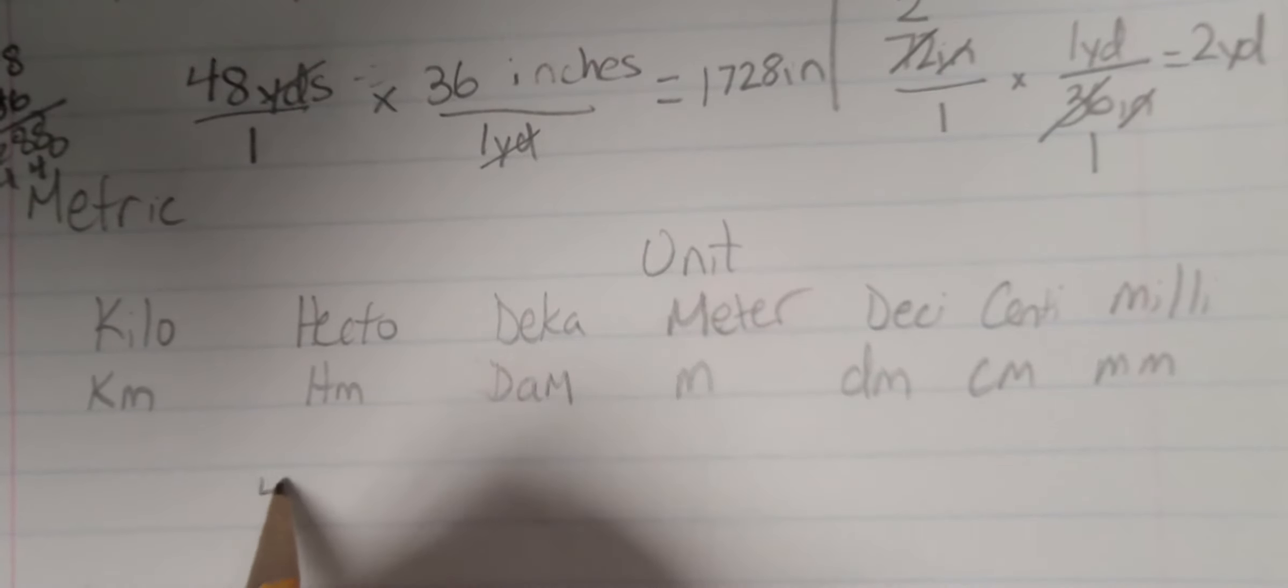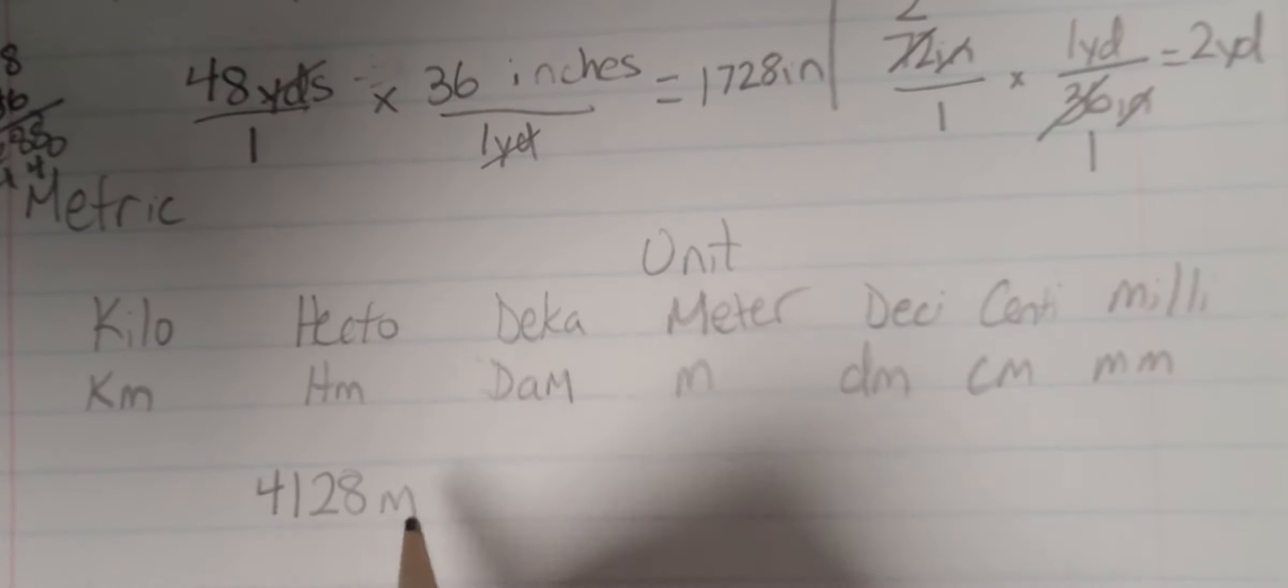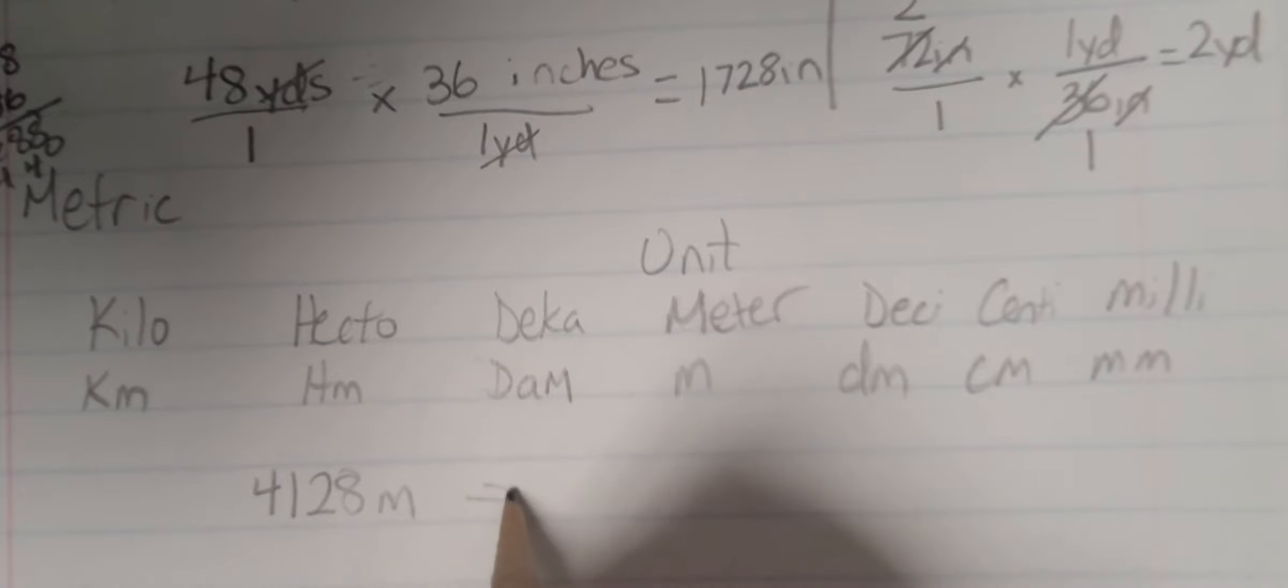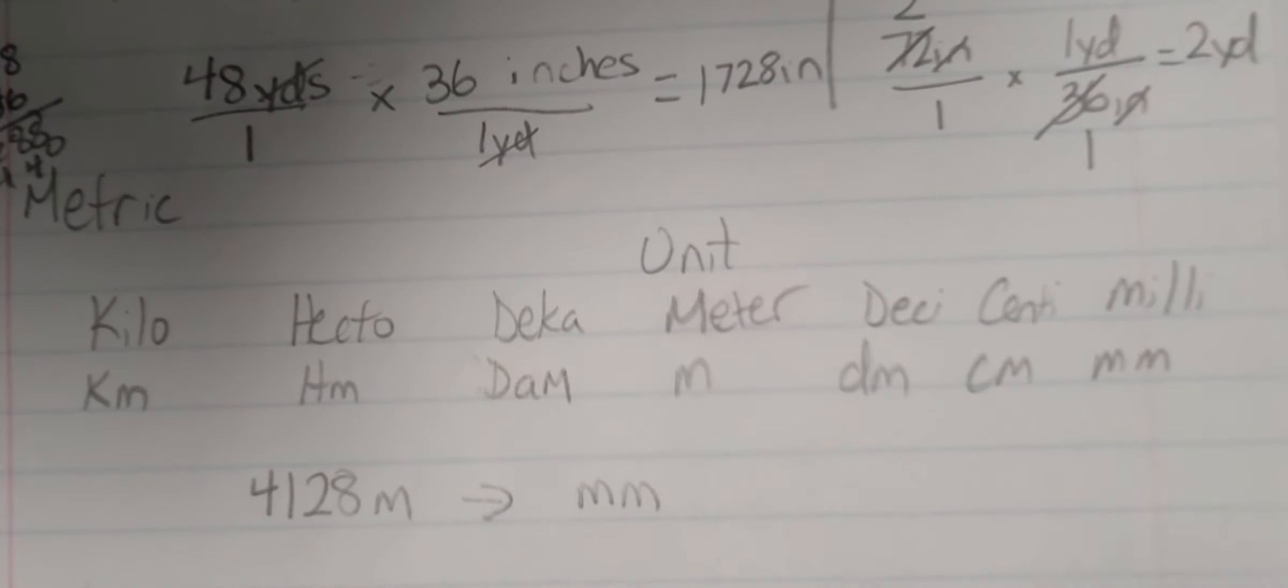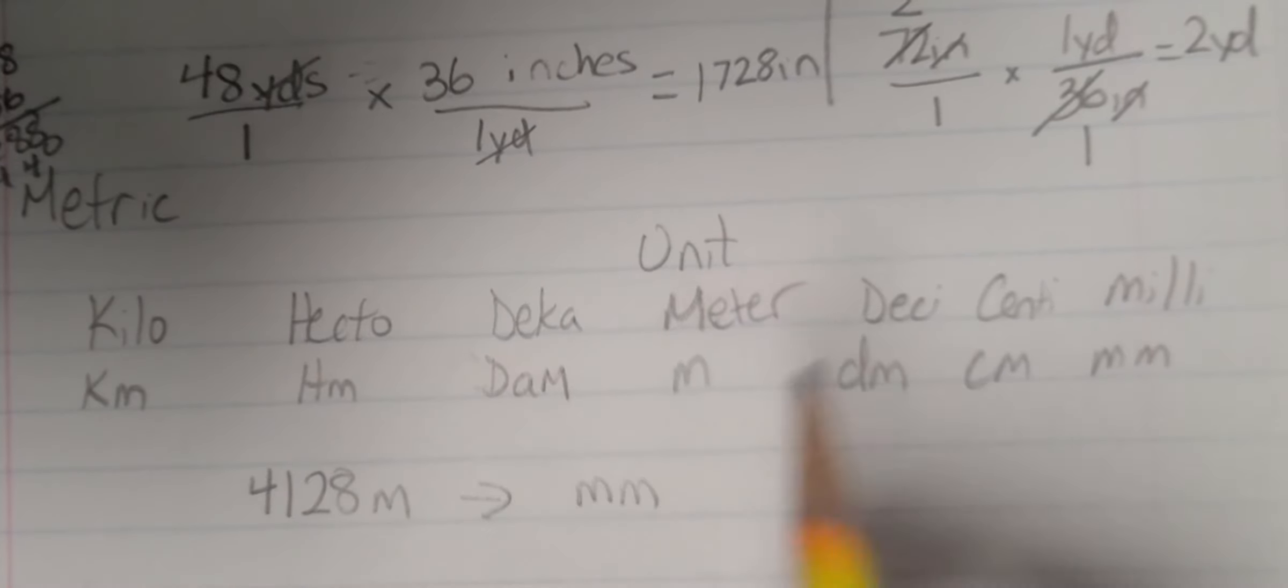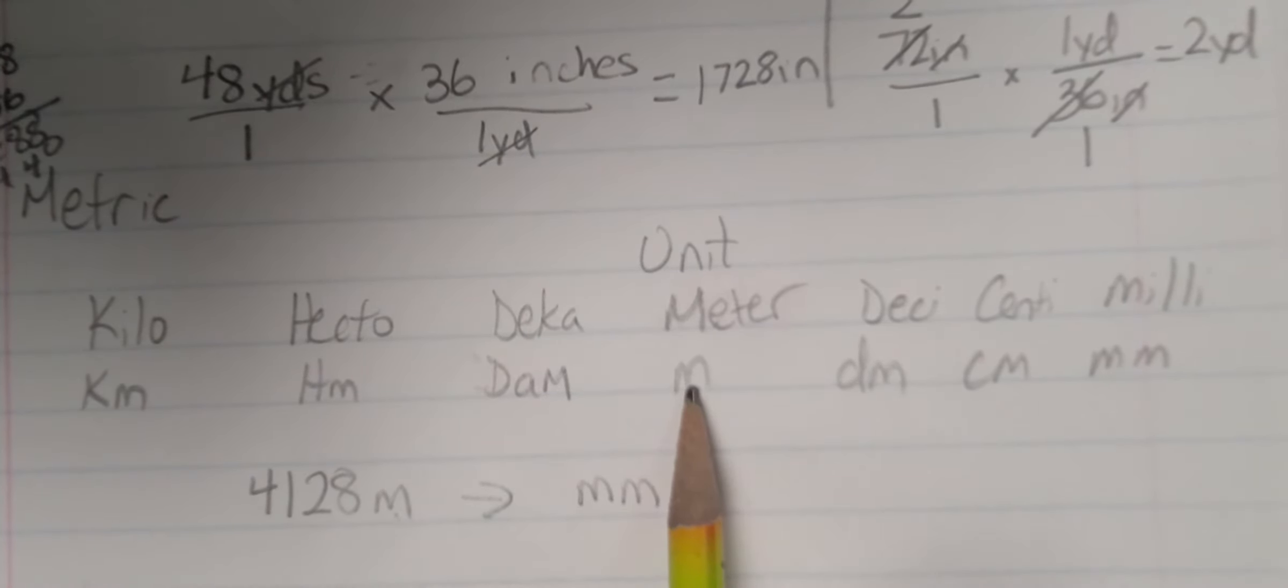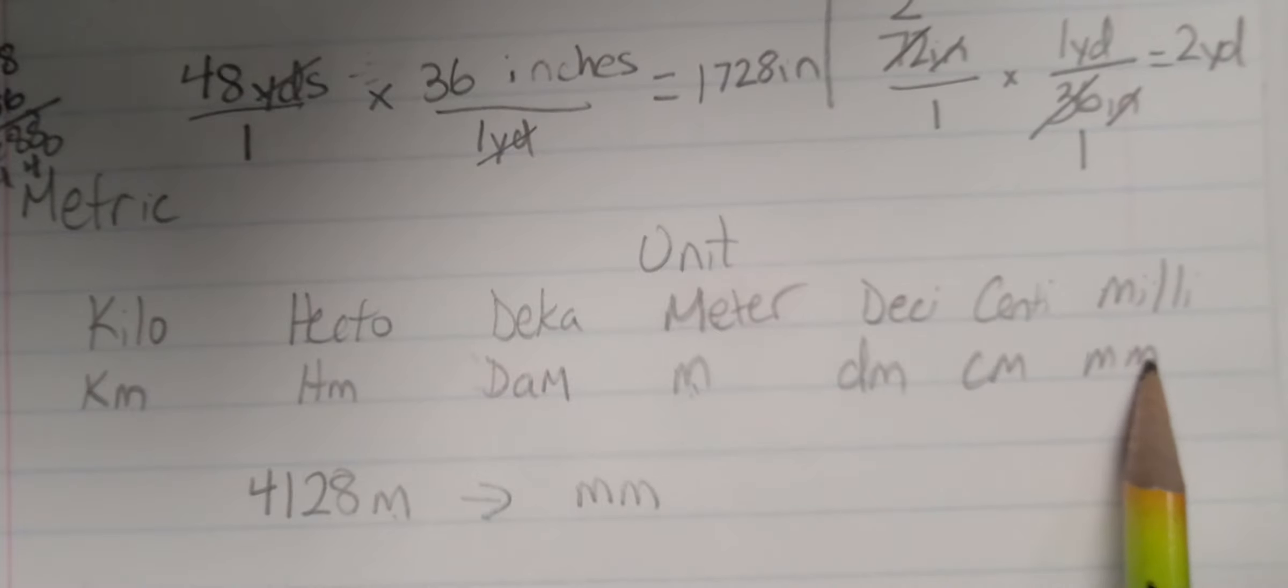So let's say I want to convert 4,128 meters, and I want to make this into millimeters. The simplest way to do it is start at your unit here, and you're going to count how many spaces away and which way you're going to go. So to get from meters to millimeters, I have to go 1, 2, 3 spaces away.